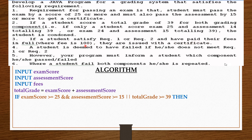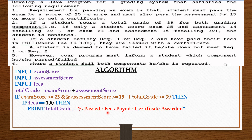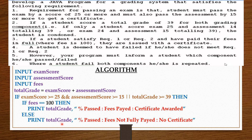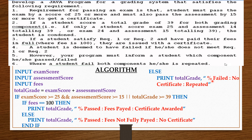If a student satisfies requirement one or requirement two and has paid their fees in full, they are issued a certificate. So we say: if fee equals 100, then print total grade in percentage, passed, fees paid, and certificate awarded. The else here goes with the fees if — meaning if fees is not equal to 100, print total grade in percentage, passed, fees not fully paid, and no certificate yet. The outer else goes with the first if statement — meaning if the condition is false, print total grade in percentage, failed, no certificate, and repeated.